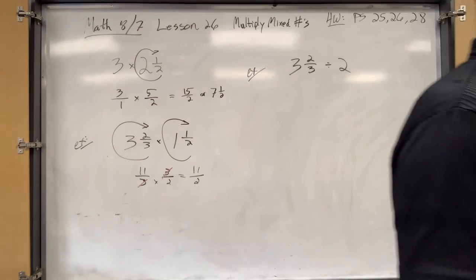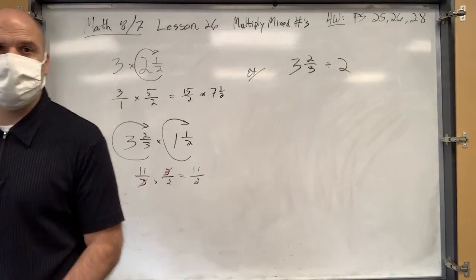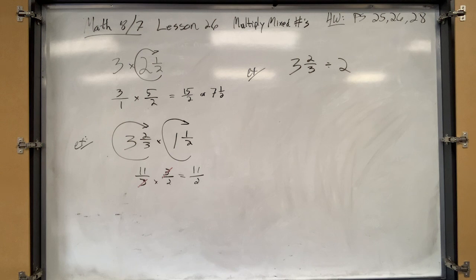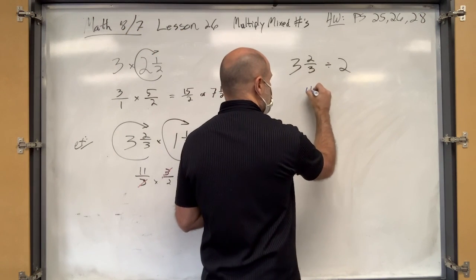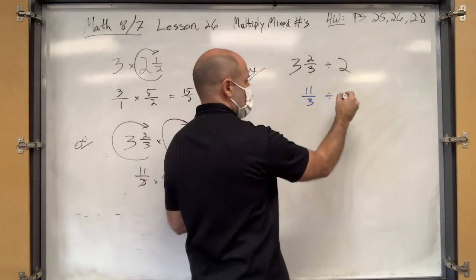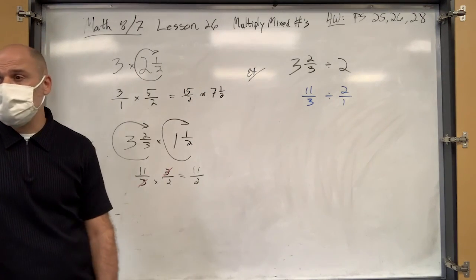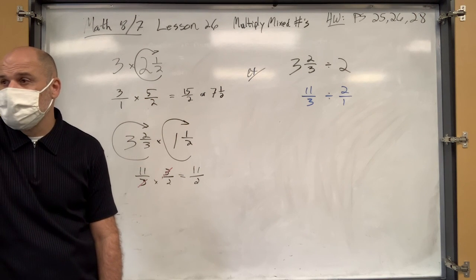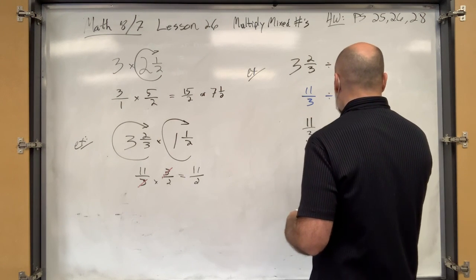I haven't heard the right answer yet — a lot of people are saying 22 over three, but the answer is 11 over six. Let's change to improper fractions first. That gives us 11 thirds divided by... wait — I tricked you. That's a division problem, not a multiplication problem. So how do we divide fractions? You don't — copy, dot, flop. So this becomes 11 thirds times one half, which is 11 over six.